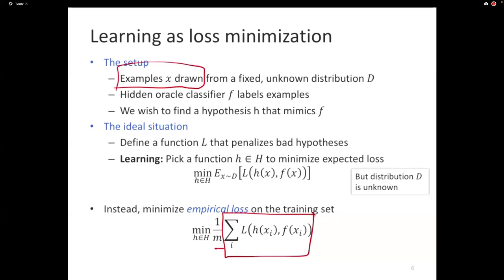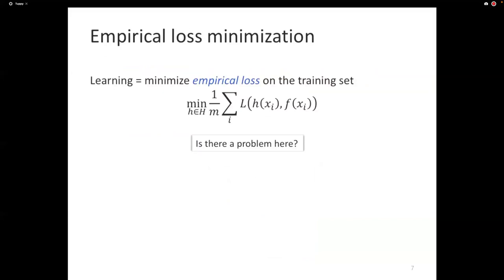So now we have the new agenda here. The program for learning is to minimize the empirical loss from the training set. Now what's the problem? Yes. That's a very good point. That's not what I had in mind, but I'll just address that. When I say is there a problem here, I'm really asking to read my mind. That makes no sense. But that's a very good point.